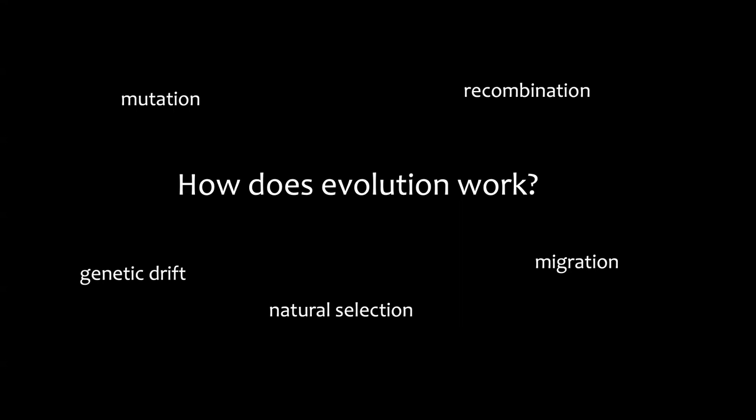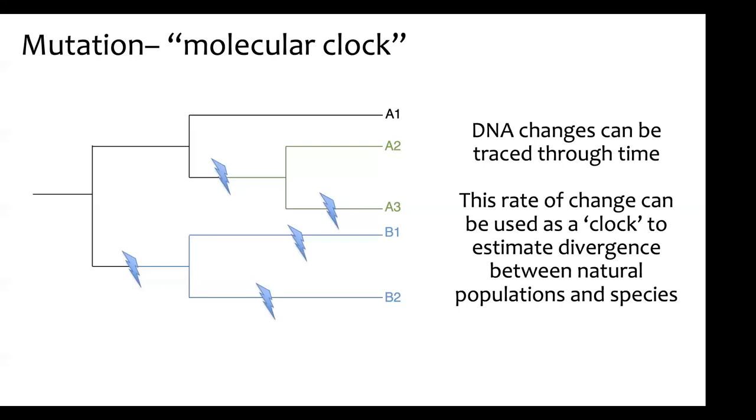Migration — most people think of as people moving from place A to place B, which we also think about in those terms. But for geneticists it also means gene flow: the arrival of particular variants from population A that migrate through, say, reproduction, to population B. It's the interplay of all these forces that we try to study and reconstruct to infer evolutionary history.